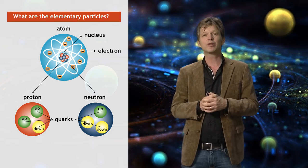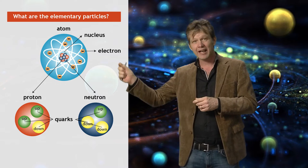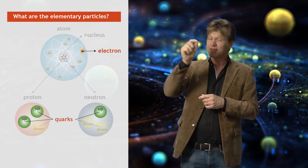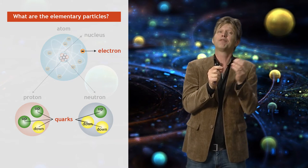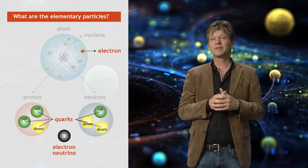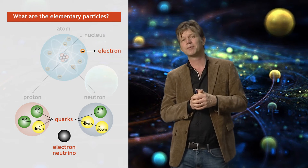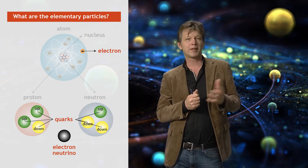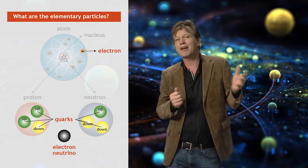The elementary building blocks of atoms are therefore the electron, the up-type quark, the down-type quark, and there is actually a fourth particle, which we call the electron neutrino. This is a rather mysterious particle that is very difficult to observe. It has a very small mass compared to the other three particles and does not bound in atoms.